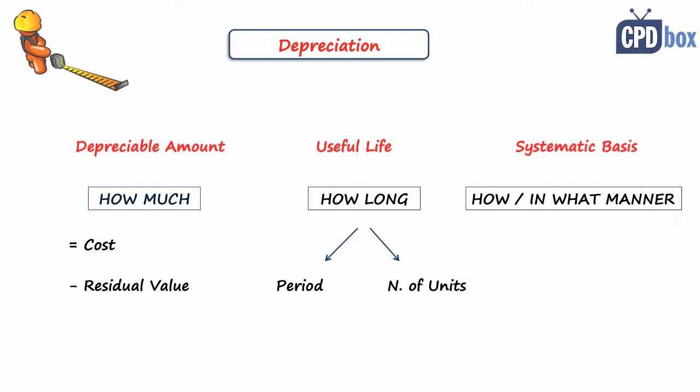The third element, systematic basis, is nothing else than the selection of appropriate depreciation method, for example straight-line, diminishing balance, or number of units. Useful life, residual value, and depreciation method should be reviewed at least at financial year-end seeking for any change. If there is a change, it should be accounted for as a change in accounting estimate in line with IAS 8. It means prospectively, with no restatement of previous periods.